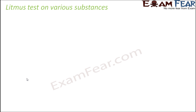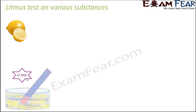Let us see what happens when the litmus test is performed on various substances. We spoke about many substances that are acidic, basic, or neutral in nature. First, let's take the example of lemon. A lemon contains citric acid, so it is acidic in nature. When you prepare a lemon solution, take the lemon juice in a bowl and put blue litmus paper — the blue litmus paper will turn red. When you put red litmus paper, there will be no change in color. This proves it is acidic in nature.